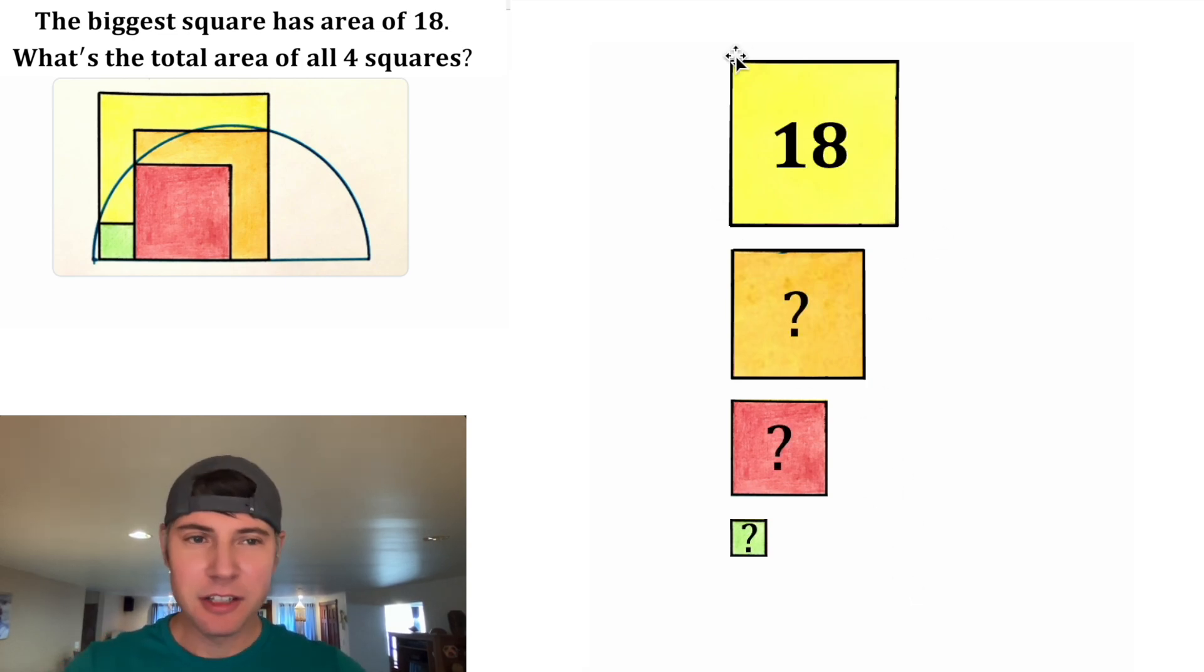Next, let's assign some variables. Let's have the side of the largest square be A. This one has side B. And for the other ones, we'll do C and D. So we can say the area of this orange square is equal to B squared. The red one has an area of C squared and the green one has an area of D squared. And that's just by doing the base times the height.